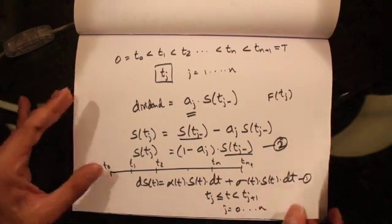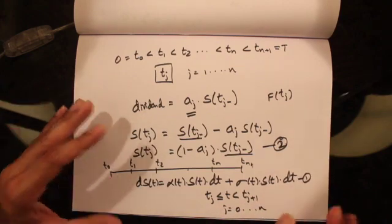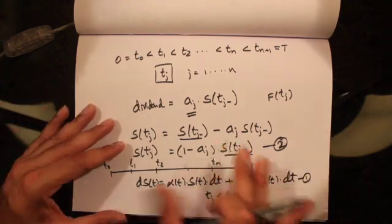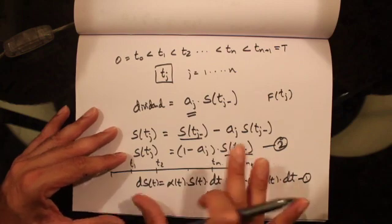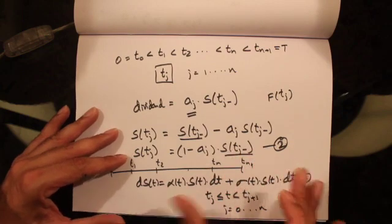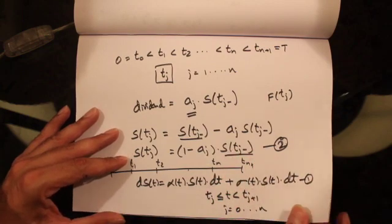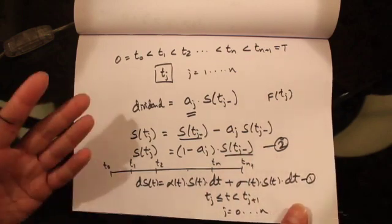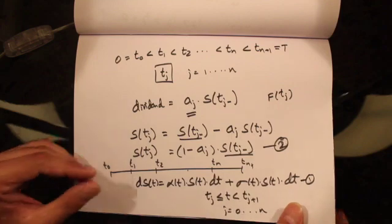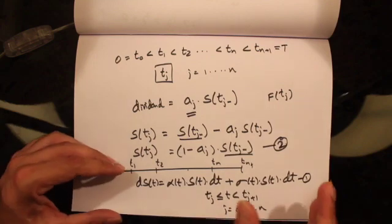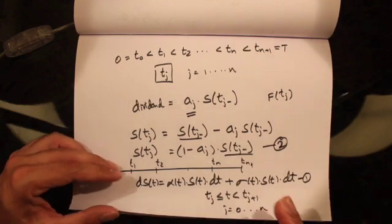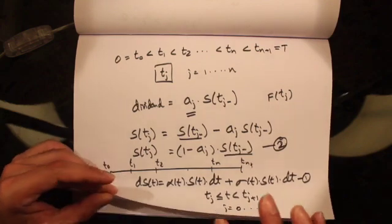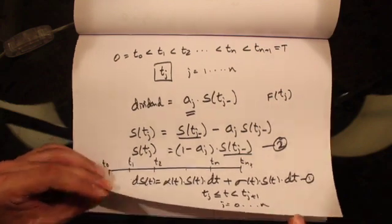Now that we have the full dynamics of how the stock actually behaves, we're going to construct a portfolio like we've been doing so far. The portfolio is going to invest money in the stock and the money market account.